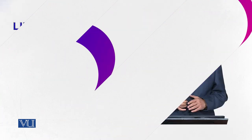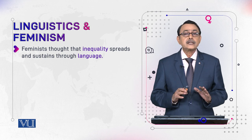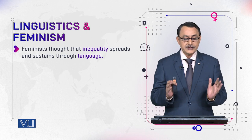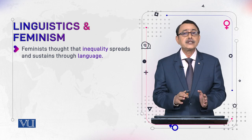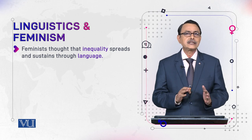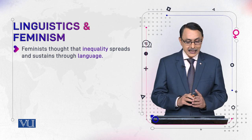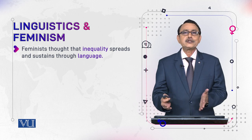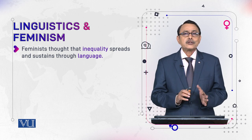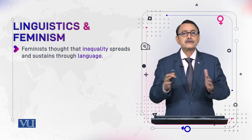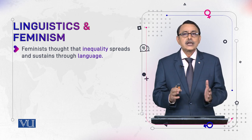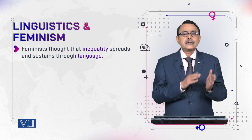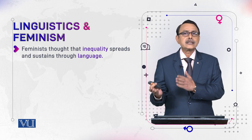This was a very just demand, and is a very just demand. Feminists thought that inequality is perpetuated and sustained through language. Language is the concern of linguistics, so this is how the interests of people from both fields were shared — linguists turned to feminists and feminists turned to linguists.